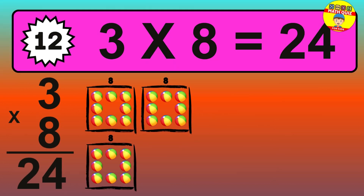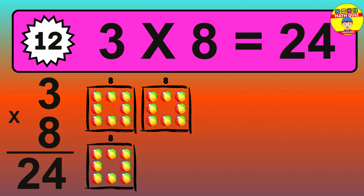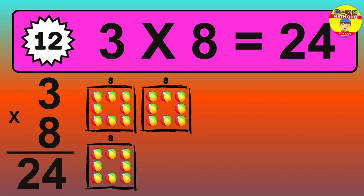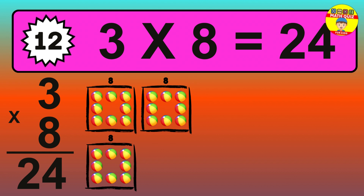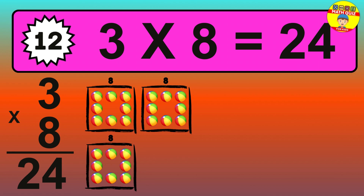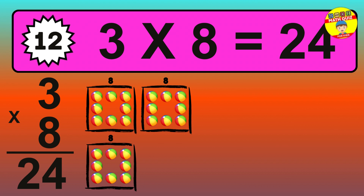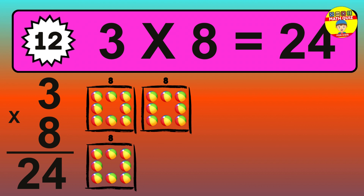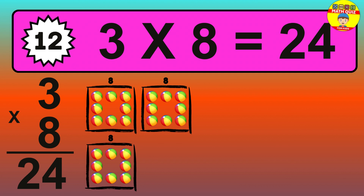Question 12. 3 times 8 equals what? The answer is 3 times 8 is 24. To calculate, we have 3 groups with 8 balls each one. So, how many balls do we have? 24 balls.